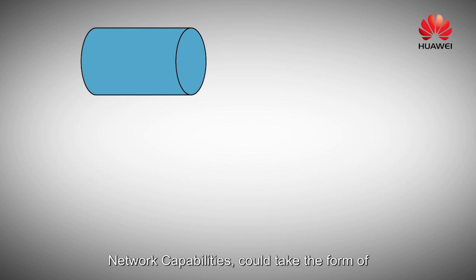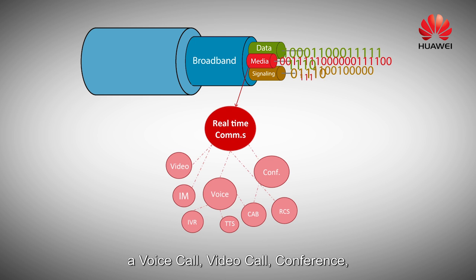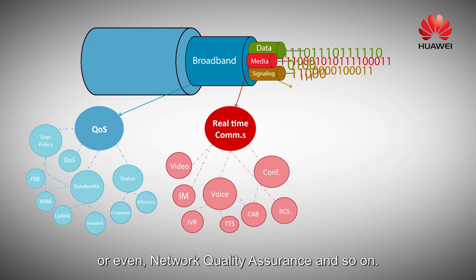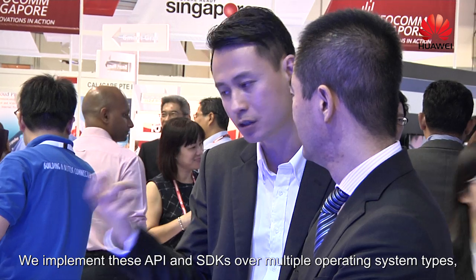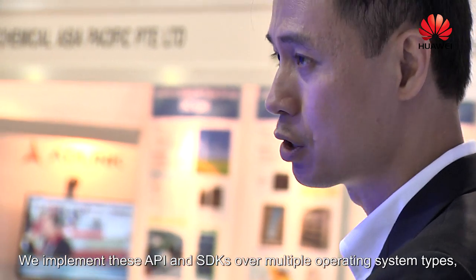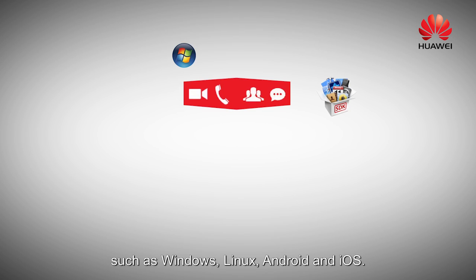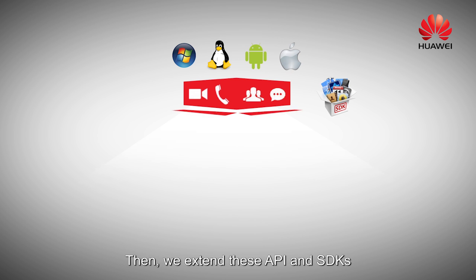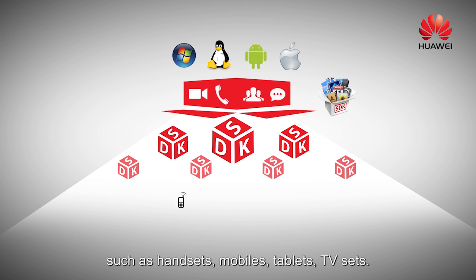Network capabilities could take the form of a voice call, video call, conference, or even network quality assurance and so on. We implement these APIs and SDKs over multiple operating system types such as Windows, Linux, Android, and iOS. Then we extend these APIs and SDKs into multiple types of connected devices such as handsets.